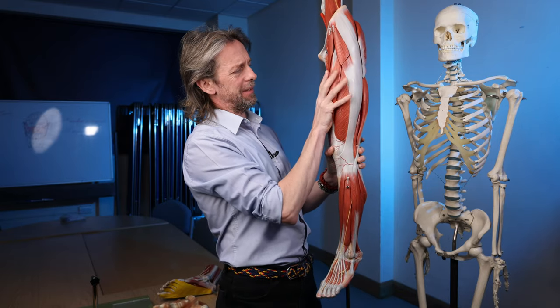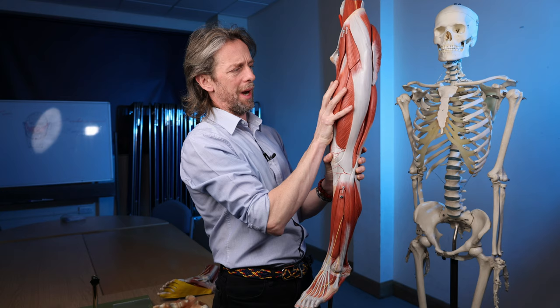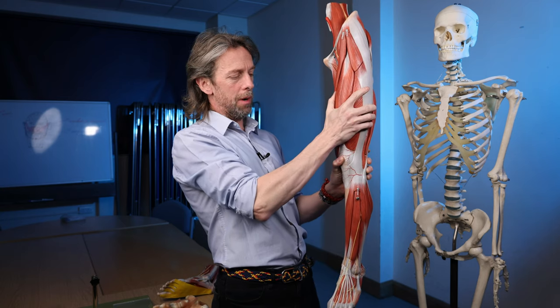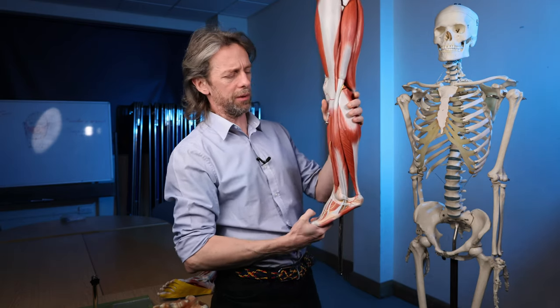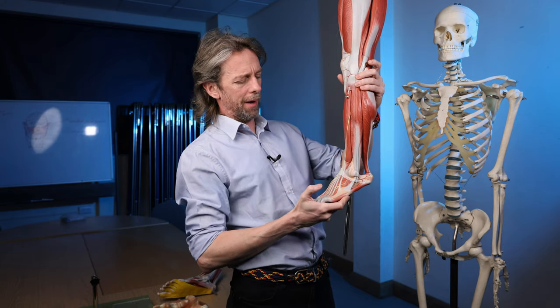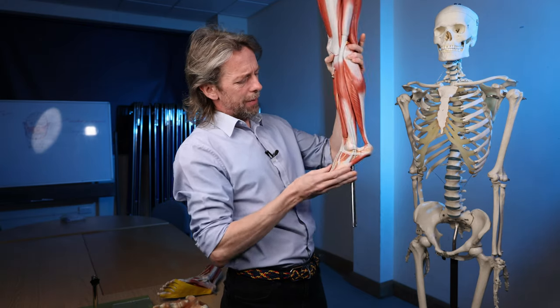So fascia is a connective tissue sheet that wraps around, in this case muscles, helps hold everything together, helps give us shape, it's supportive. It's mostly made up of fibroblasts and type 1 collagen fibers and what have you when we get down into the foot.